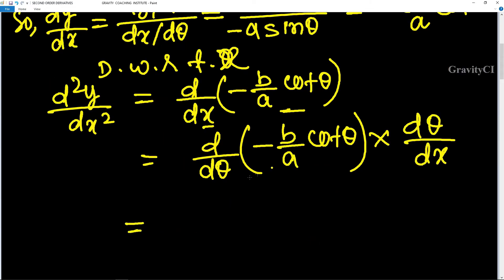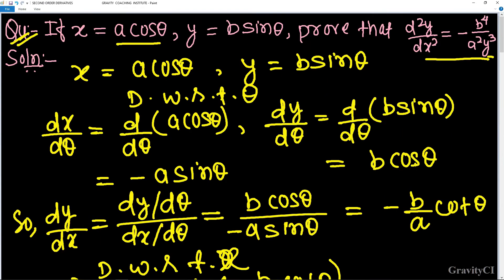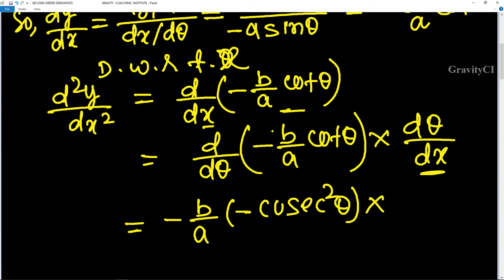We differentiate minus b/a · cot θ, which gives minus cosec squared θ, and multiply by dθ/dx. Since dx/dθ equals minus a·sin θ, dθ/dx is the reciprocal: 1 upon minus a·sin θ.